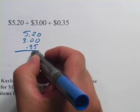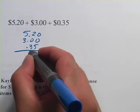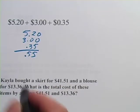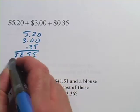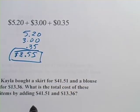0 plus 0 plus 5 is 5. 2 plus 0 plus 3 is 5. I've got my decimal point, and 5 plus 3 is 8. So this is $8.55.